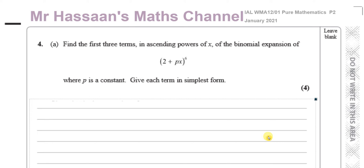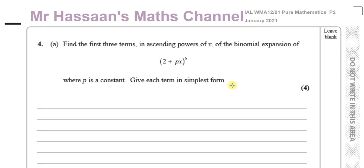Welcome back. This is Mr. Hassan's maths channel, and this is question number four from the International A-Level Edexcel January 2021 Pure Mathematics P2 paper. We have a question about binomial expansion, where we have to expand this bracket and find the first three terms in ascending powers of x, giving each term in simplified form. P is a constant here.